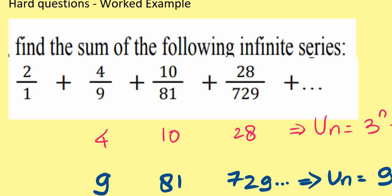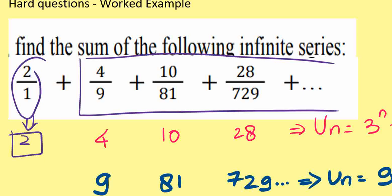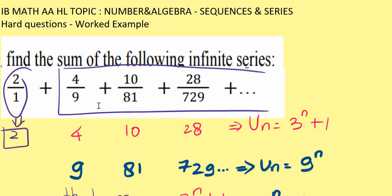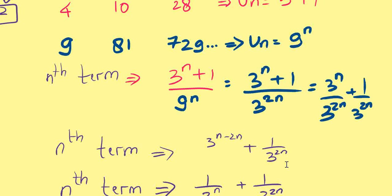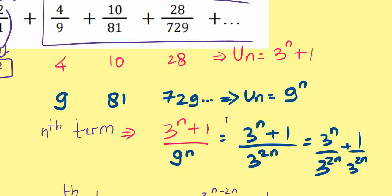We separate the term into the numerator part and the denominator part. We keep the first term, 2 over 1, as just 2. Then looking at the numerators — 4, 10, 28 — we can find the n-th term for the top, which is 3n plus 1. For the denominators — 9, 81, 729 — we can find the n-th term, which is 9 to the power of n.